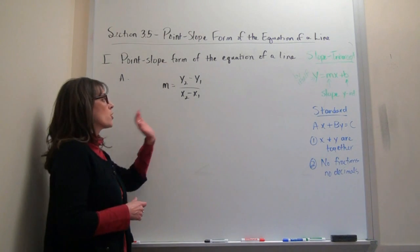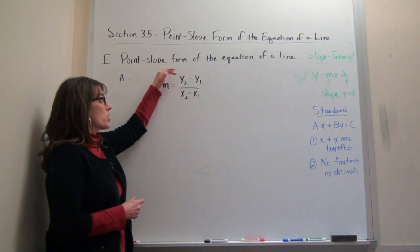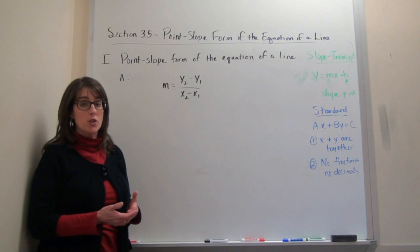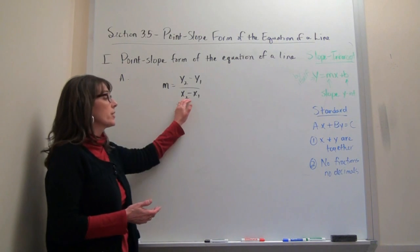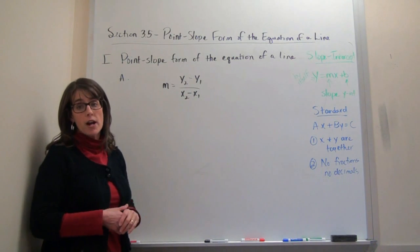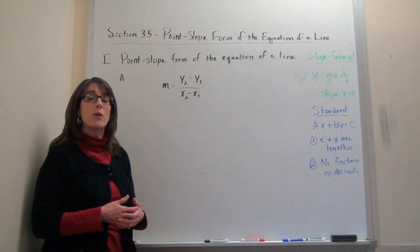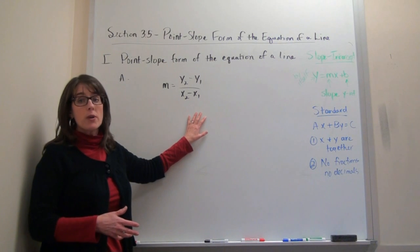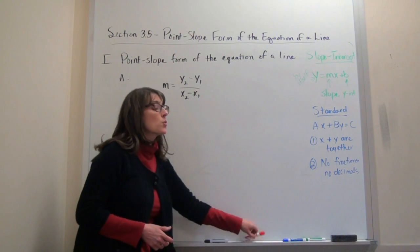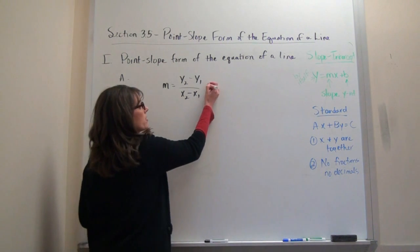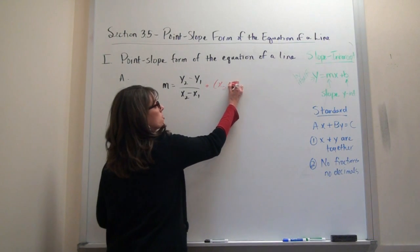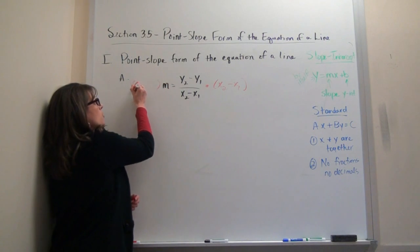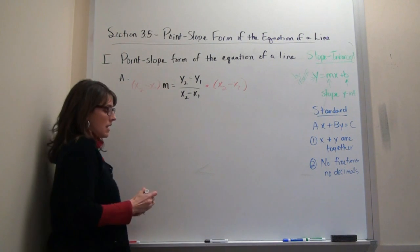I'm going to start with the slope formula: subtract your y's on the numerator, subtract your x's on the denominator. I'm going to rearrange this formula for slope. The first thing I'll do is clear out the denominator of this fraction — slope is a fraction, rise over run. To clear it out, all you have to do is multiply by that denominator. So I'm going to multiply both sides by x2 minus x1.